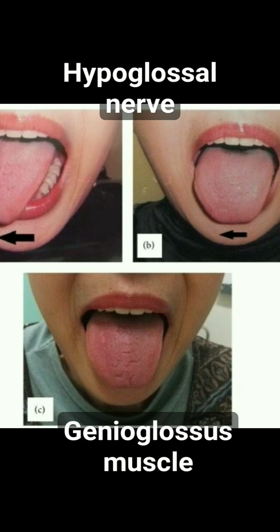The right genioglossus tries to push the tip of the tongue towards the left side, and the left genioglossus tries to push the tip of the tongue towards the right side. Therefore the tongue neither moves right nor moves left — it remains in the midline. This is normal.